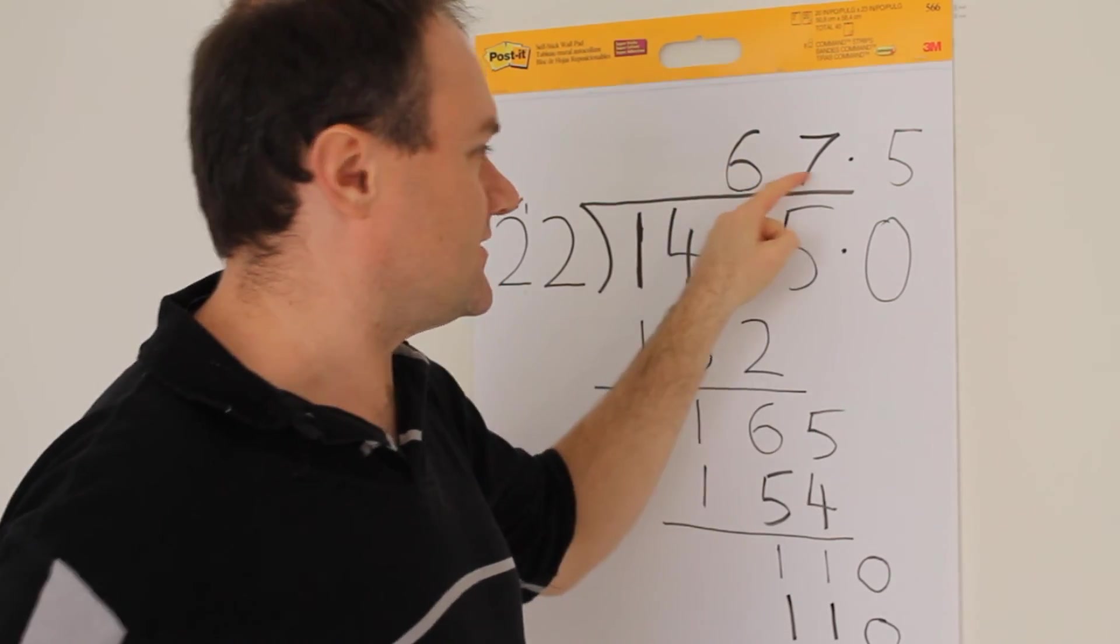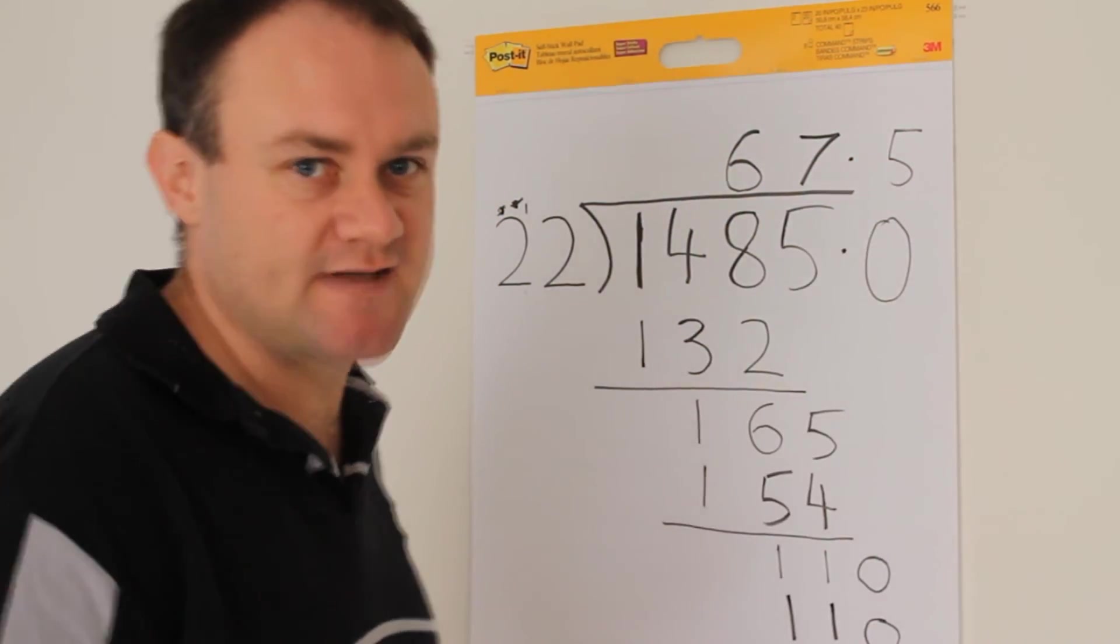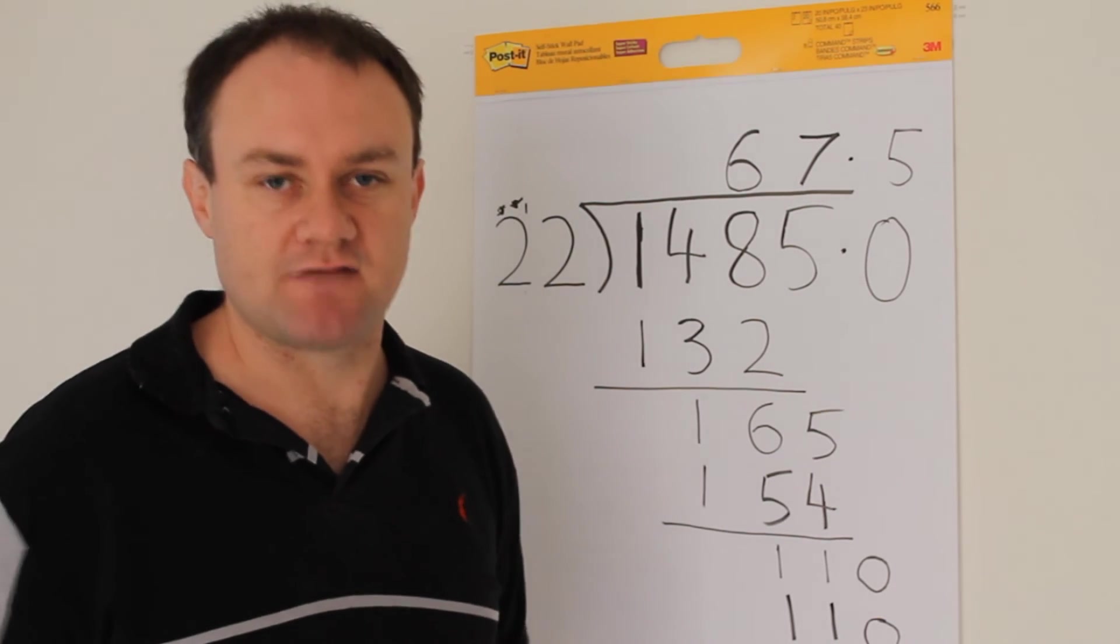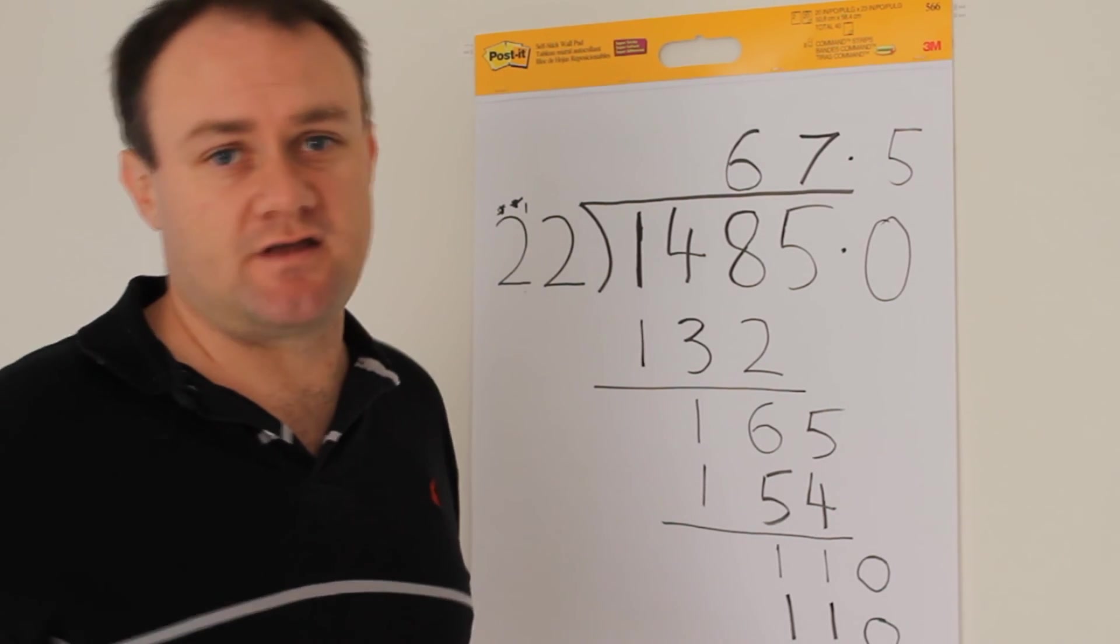And funnily enough, it's 67.5, which is exactly the same as 67 and a half. So there you go.